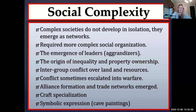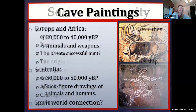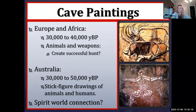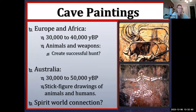With more leisure time — no longer spending every waking hour gathering food — we start to see the emergence of crafts and symbolic expression. Around 30 to 40,000 years before present in Europe, and 30 to 50,000 years before present in Australia, we see a significant uptick in symbolic expression: cave art, statuettes, and jewelry. There's even some evidence for symbolic expression back in the time of the Neanderthals.